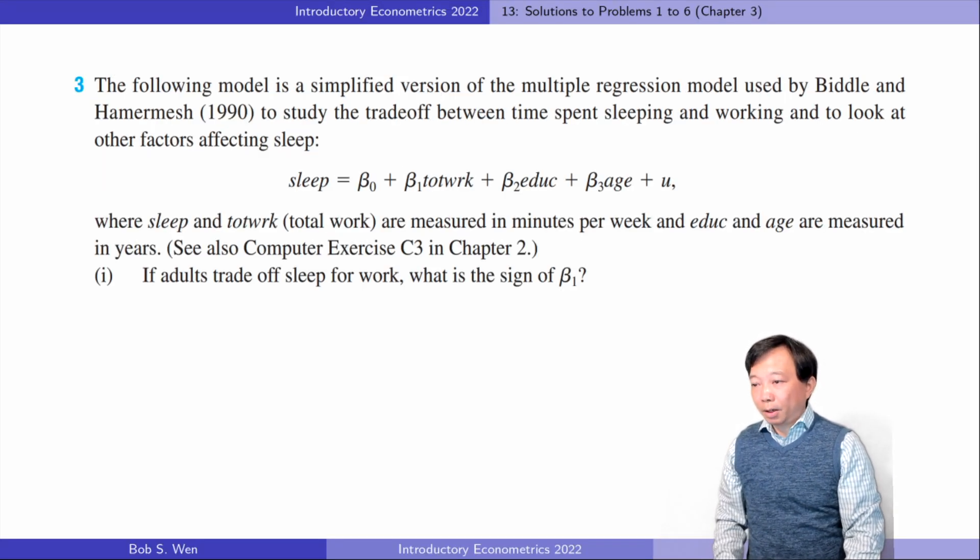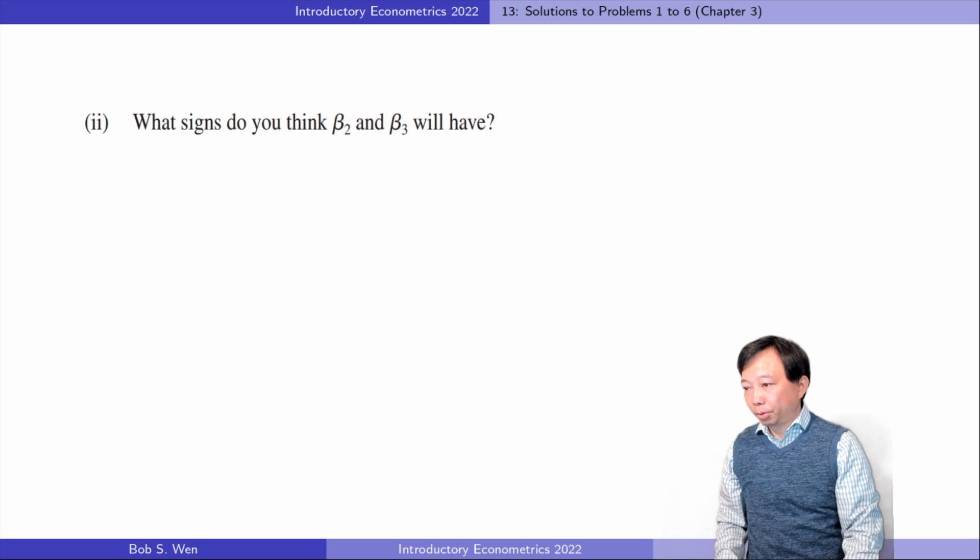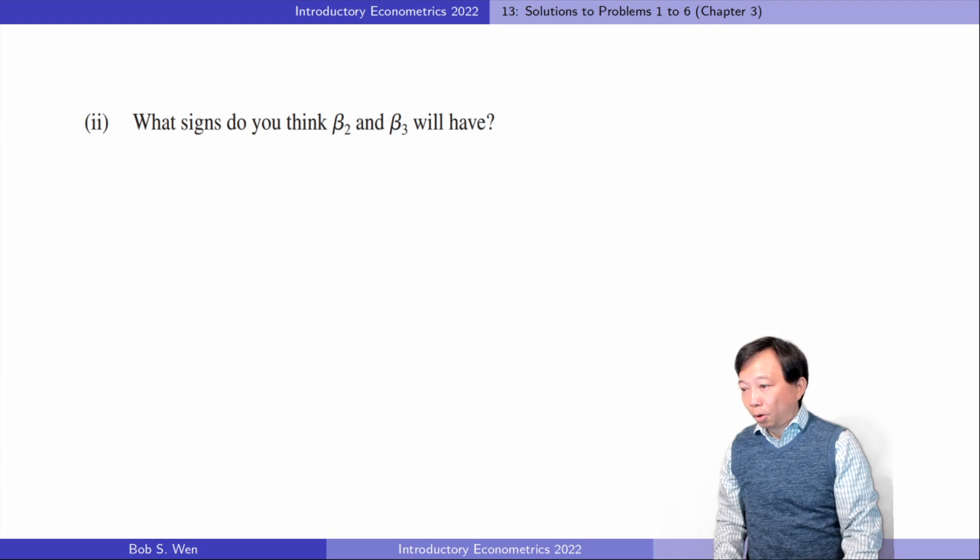Let's go to the third problem. For questions 1 and 2, if adults trade off sleep for work, more work implies less sleep. So the sign of beta 1 should be negative. The coefficient on education, beta 2, should be negative. A better educated person is more likely to study more and sleep less. The coefficient on age, beta 3, should be negative too. We tend to sleep less when we grow up, especially when we get older.